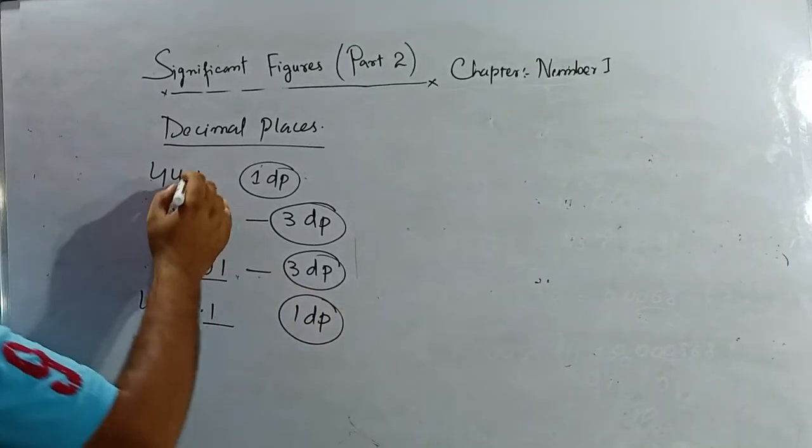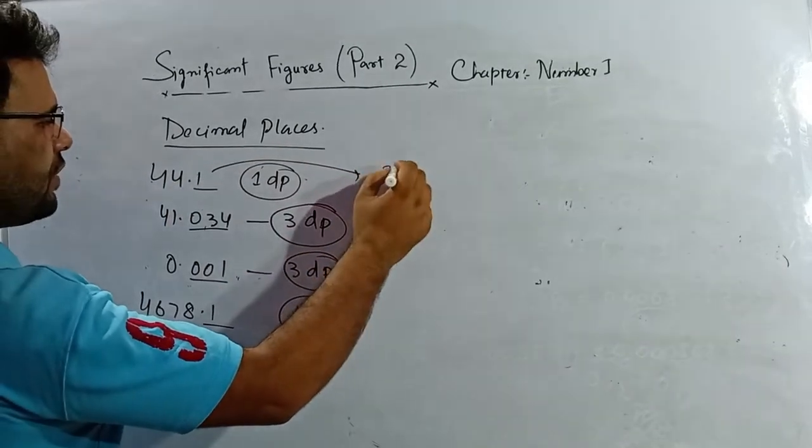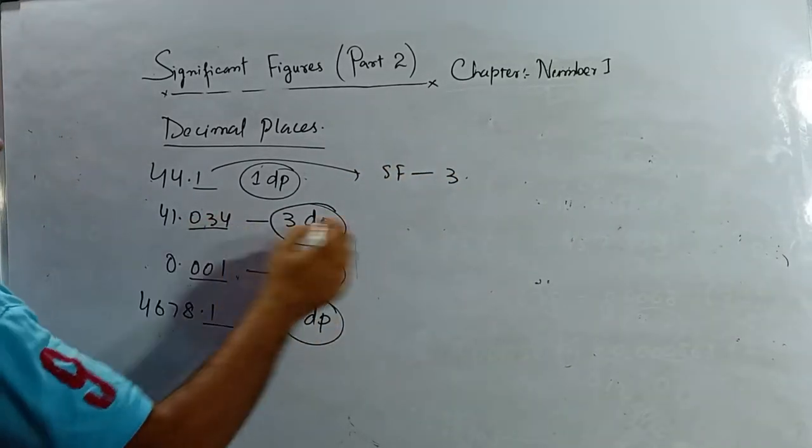At the same time, if you check the significant figures of the same numbers: 0.001 has three significant figures... actually only one significant figure. And other numbers like 0.10056 have five significant figures.